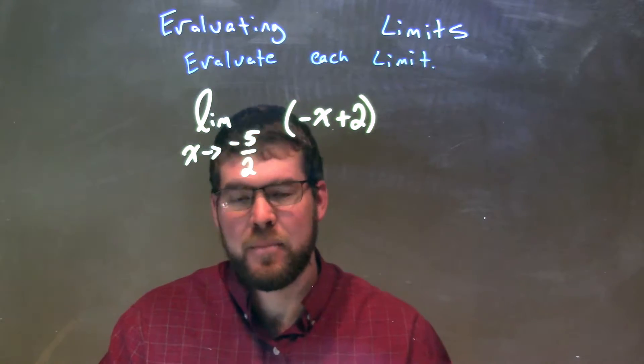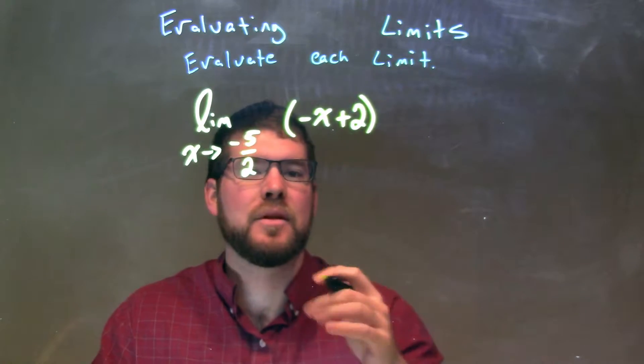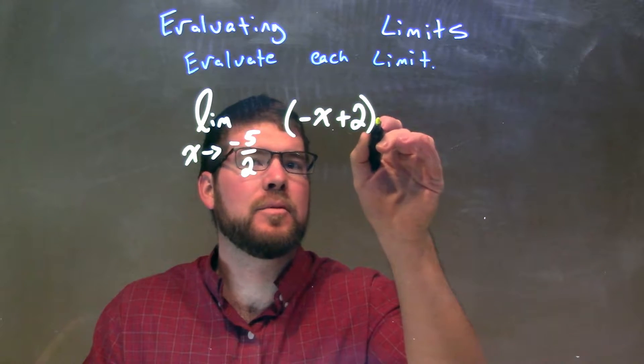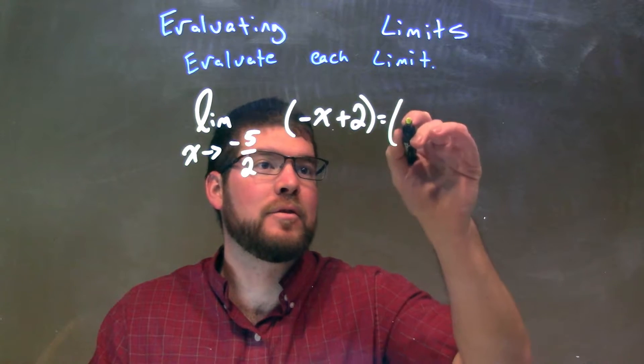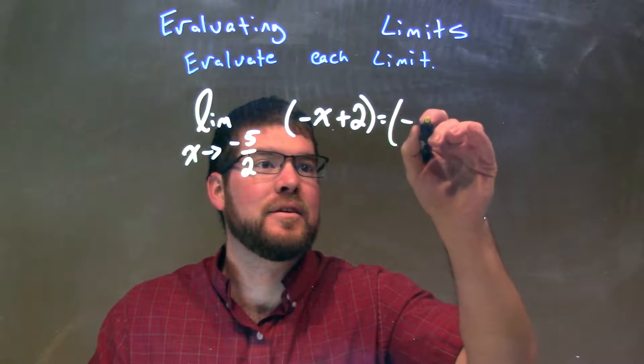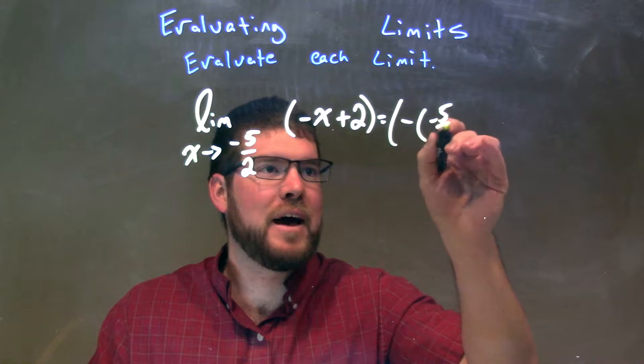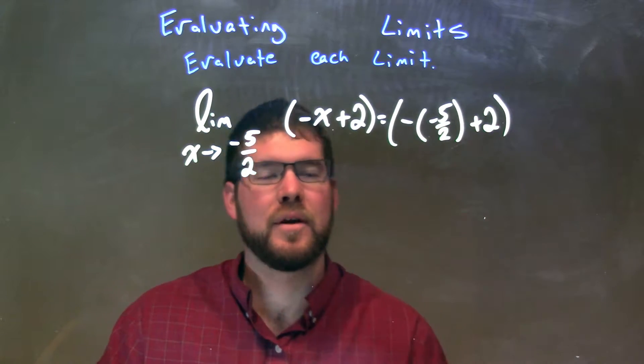We can plug this limit into that polynomial, directly substituting that in there. This is going to be equal to, we have negative 5 halves, and for x, we have a negative negative 5 halves plus 2 going on right there.